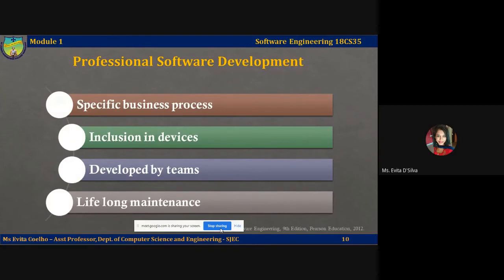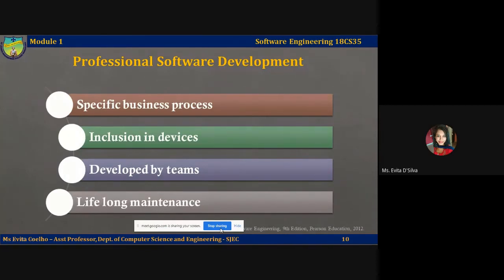All these software are not built because someone likes programming or wants to practice coding skills — they have a particular objective in mind and have to be built professionally. The second objective of building software professionally is to include it in other devices. Consider a microwave oven or a washing machine — fuzzy logic built on a chip is embedded into your hardware device; that is software which controls the working of the hardware. You may also build software professionally so it could be sold as a software product, for example a CAD software, to the open market.